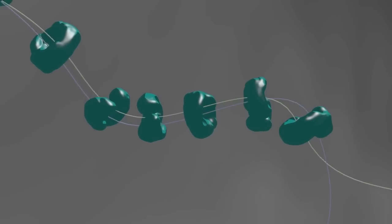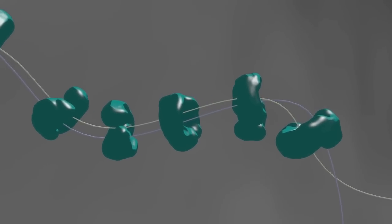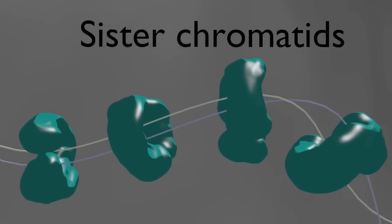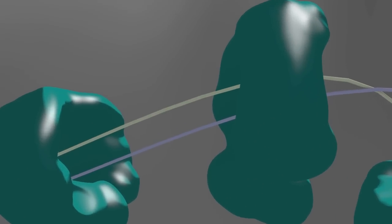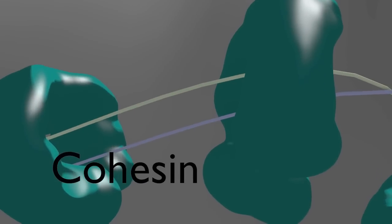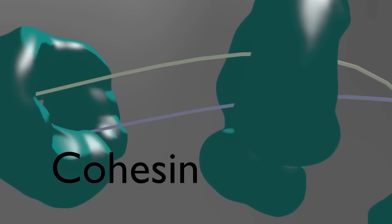After DNA replication, the new copies of each chromosome, known as sister chromatids, do not float away from each other but remain attached by a protein complex called cohesin. This attachment will become important later in mitosis.